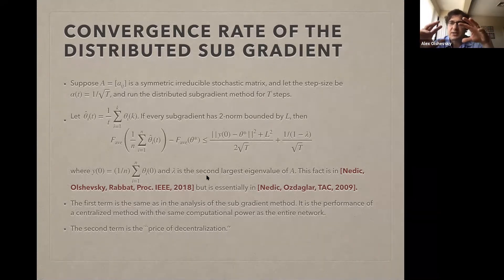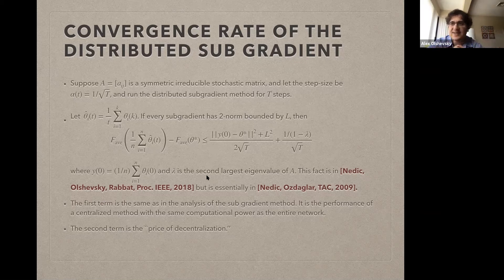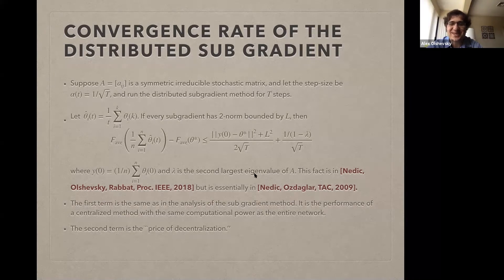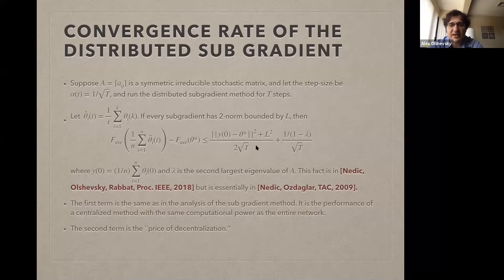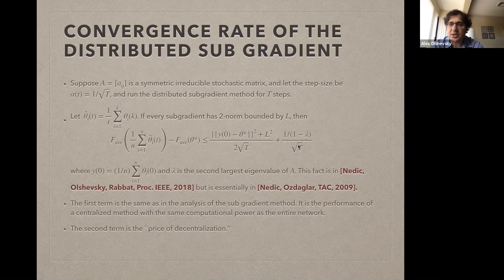Both terms decay like 1/sqrt(t) under a 1/sqrt(t) step size, which is common for the subgradient method. The second term has a numerator scaling like 1/(1-lambda), where lambda is the second largest eigenvalue of A. The weights A_ij get stacked into the matrix A, and this is related to the eigenvalue gap. This is what you pay for using the decentralized method — if you had magical access to all subgradients at a single location, you'd just get the first term. I call this the price of decentralization.